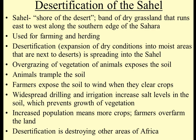Desertification of the Sahel: the Sahel is the band of dry grassland on the edge of the desert, running along the southern edge of the Sahara. It's a transition zone between the desert and the grasslands, used for farming and herding. Desertification is the expansion of dry conditions into normally moist areas. Over-grazing exposes the soil, animals trample plants, farmers expose soil to wind — next thing you know, deserts are spreading throughout the area.